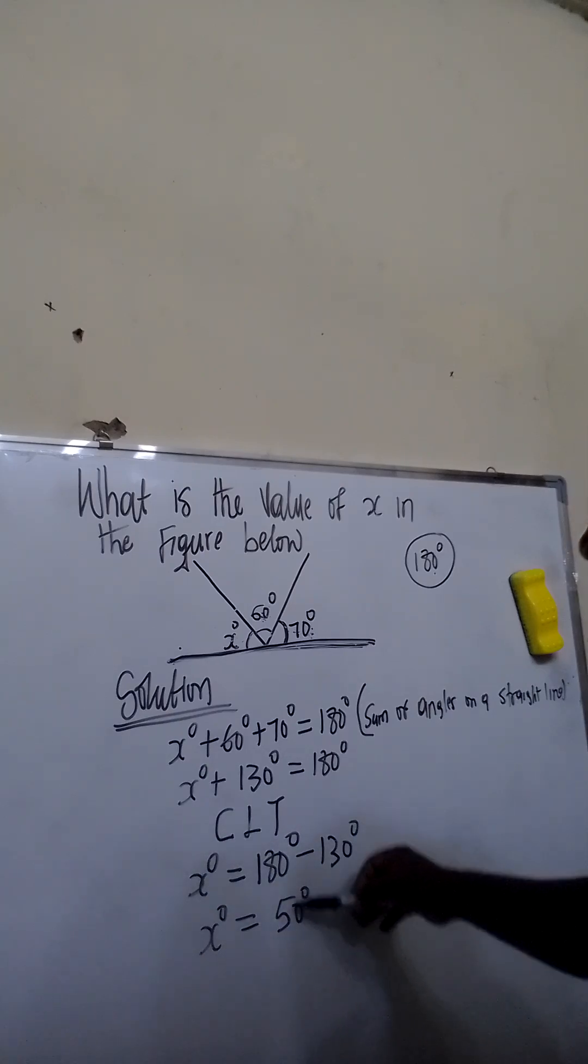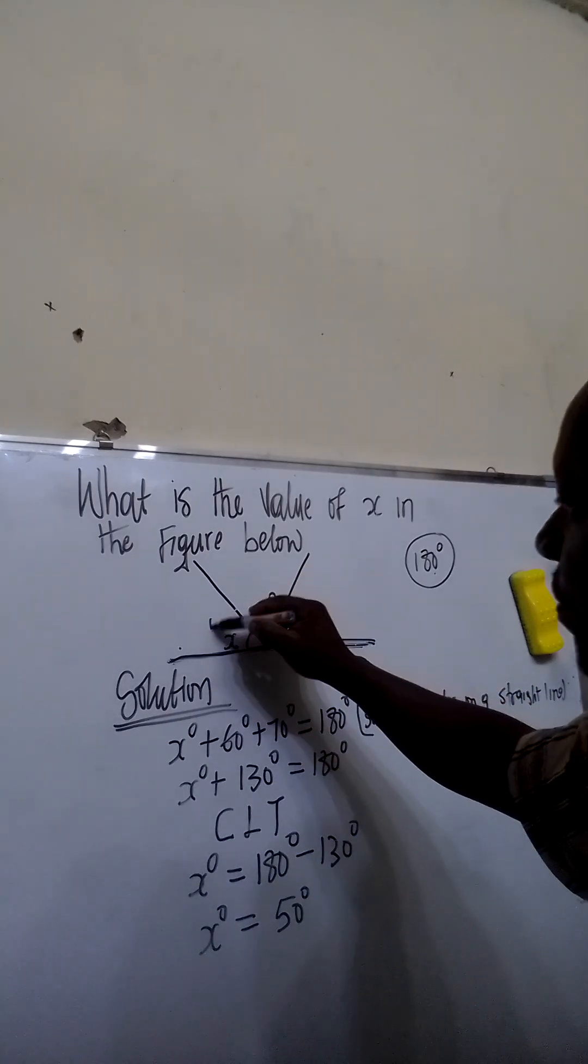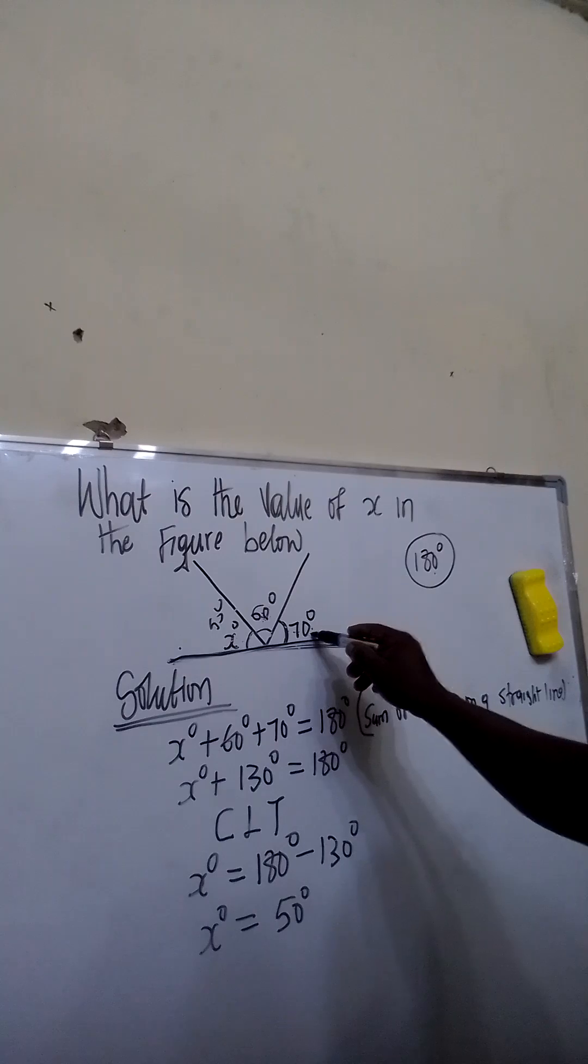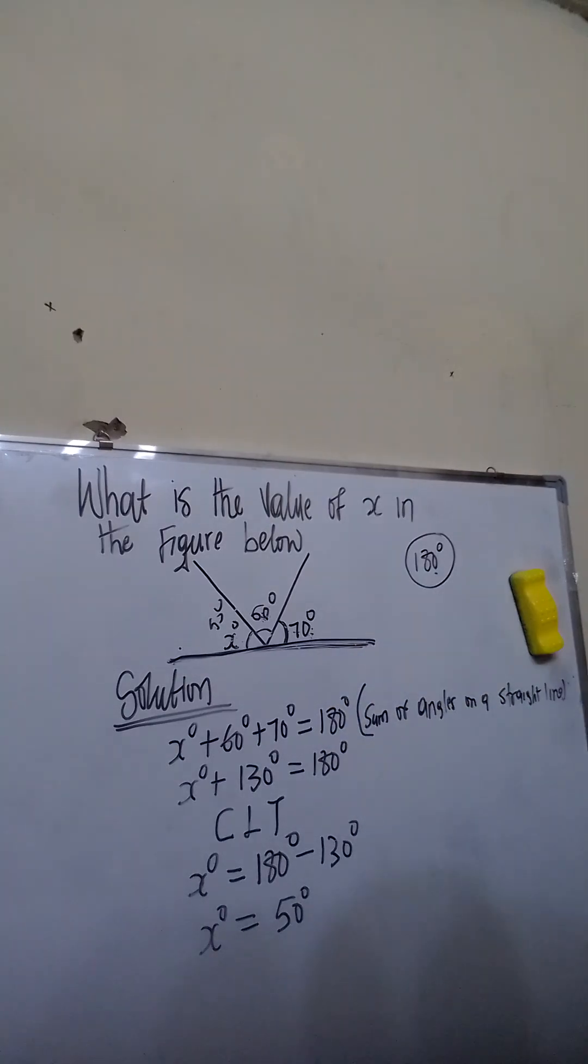When you replace 50 in this equation, 50 plus 60 degrees is 110 degrees, and 110 plus 70 is equal to 180 degrees.